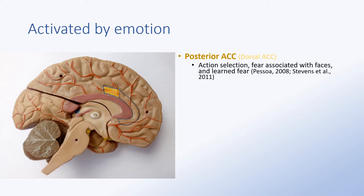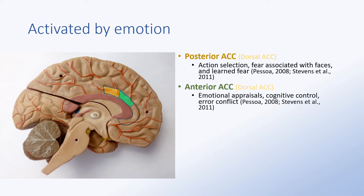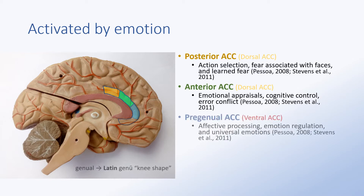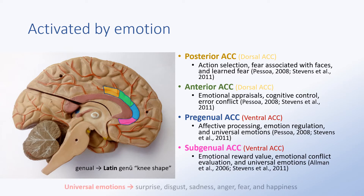The dorsal anterior division responds to emotional appraisals, cognitive control, and error detection conflict. The ventral pregenual division responds to affective processing, emotion regulation, and the six universal emotions such as happiness, sadness, fear, anger, disgust, and surprise. The ventral subgenual division responds to emotional reward value, conflict evaluation, and also universal emotions.